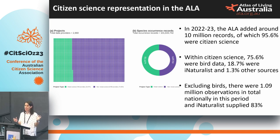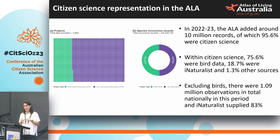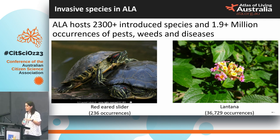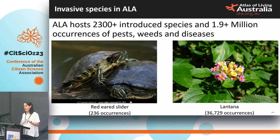A quick shout out about the importance of diversity in our observations — I am a birder and I love birds — but also the value of iNaturalist in particular, because it is actually our most important data source for other taxa. Something that is underrepresented in the Atlas is invasive species information. We estimate we have about 2,300 invasive species in the Atlas, probably about 2 million occurrence records now. While this sounds impressive, we know this is a massive underrepresentation of what currently exists.